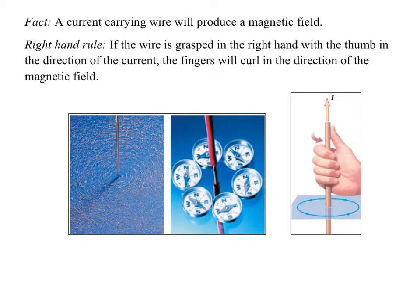This is different from what we did with the magnet, where the field comes out the north end and goes back into the south end. Now we have a magnetic field that is concentric with the center of the wire. If the current goes up, the field goes this way; if the current goes down, the magnetic field goes the other way. The direction is based on which way your thumb is facing — the direction of the current.